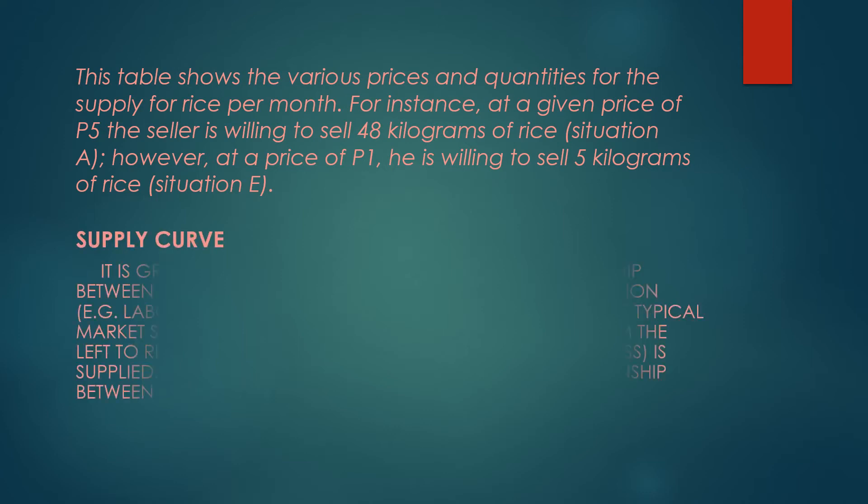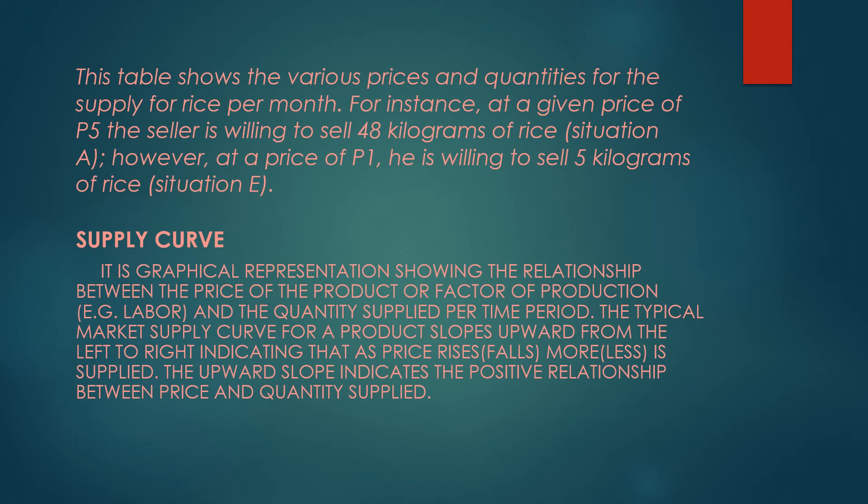The supply curve is a graphical representation showing the relationship between the price of the product or factor of production — for example, labor — and the quantity supplied per time period. The typical market supply curve for a product slopes upward from left to right, indicating that as the price rises, more is supplied. The upward slope indicates the positive relationship between price and quantity.